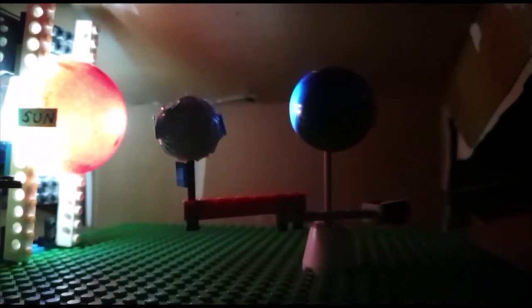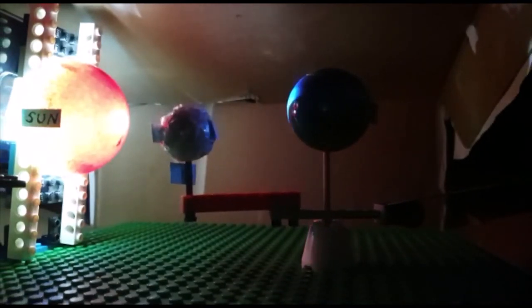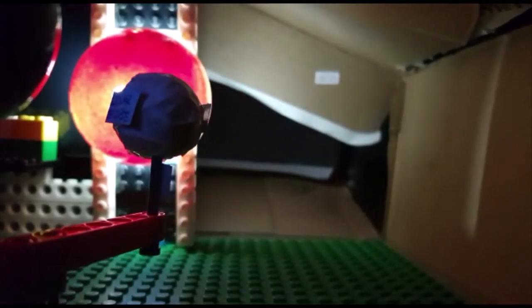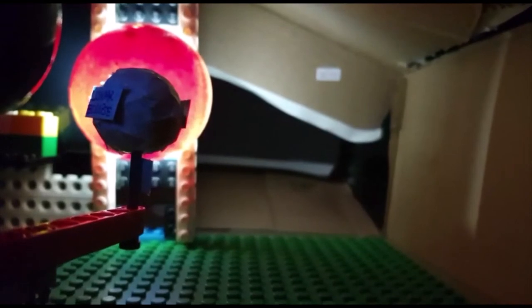As the moon revolves around the earth, when it comes between the earth and the sun, it forms a shadow on the earth and it forms a ring around the sun which is called solar eclipse.